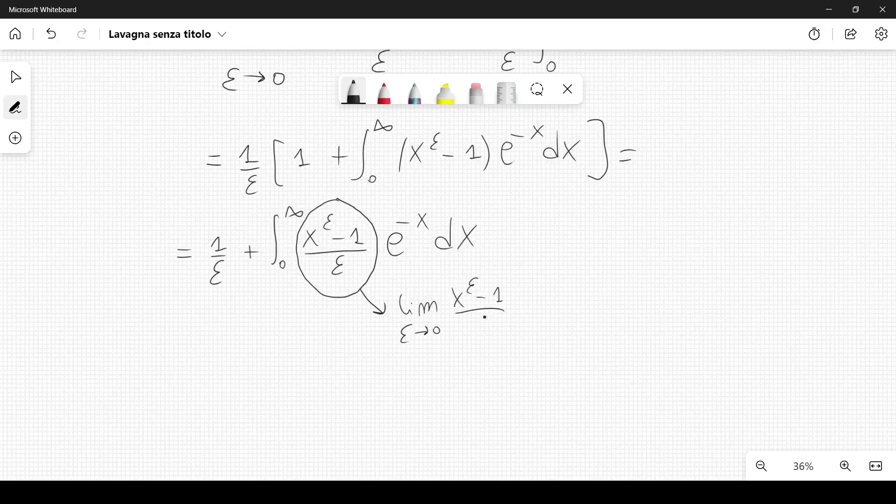This limit can be calculated as the limit as epsilon goes to 0 of the derivative of the numerator. We have the derivative of x to the epsilon, which I can rewrite as e to the natural log of x to the epsilon, equal to e to the epsilon times logarithm of x. Then we divide by 1, since the derivative of epsilon with respect to epsilon is just 1.